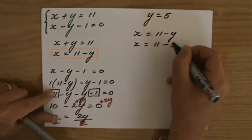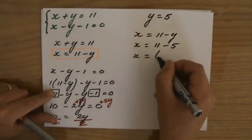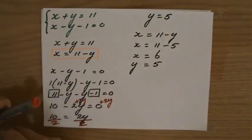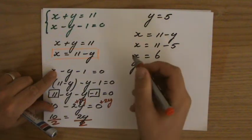11 minus y. y is 5. 11 minus 5, which is 6. So, the answer to this solution or to this problem is x is 6 and y is 5.